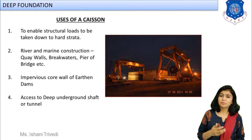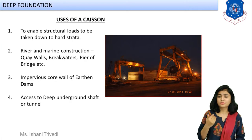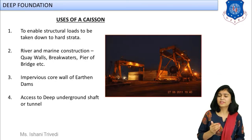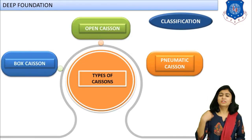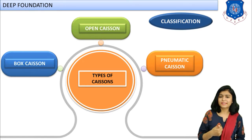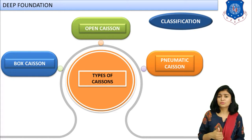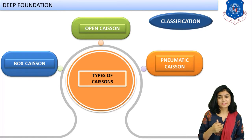The first and simplest type of caisson we discussed is the box caisson. Overall we are going to study three different types of caissons. The first is the box caisson. The second is the open caisson, also known as well foundation, which is further divided into single well and multiple well foundation. The third is a special type known as the pneumatic caisson.